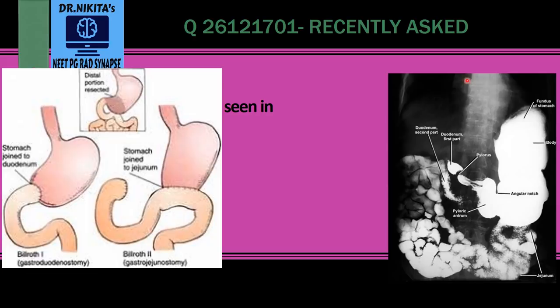This is the stomach in the barium study: the fundus, the body, the antrum, the pylorus, which then continues into the duodenal first part — that is the duodenal cap — and the second part and so forth. What happens in Crohn's disease is that this distal part of the stomach loses its anatomical landmarks. You cannot differentiate the pylorus and the antrum.